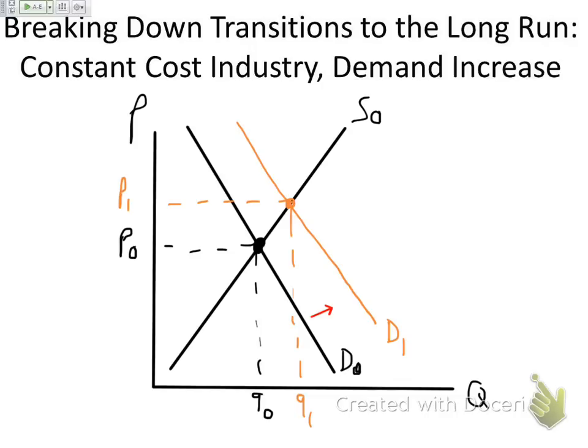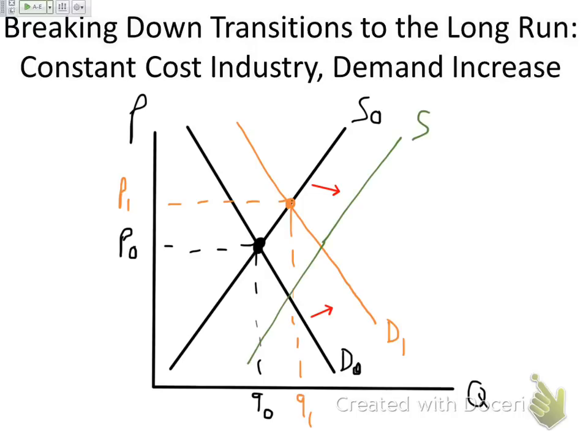Now when the price goes up, firms make profits. Other firms see those profits and they are attracted to that industry. So new firms enter the industry, and in the long run we give them time to enter the industry. That is going to shift the supply curve to the right, making a new supply curve. I'll call that S2.